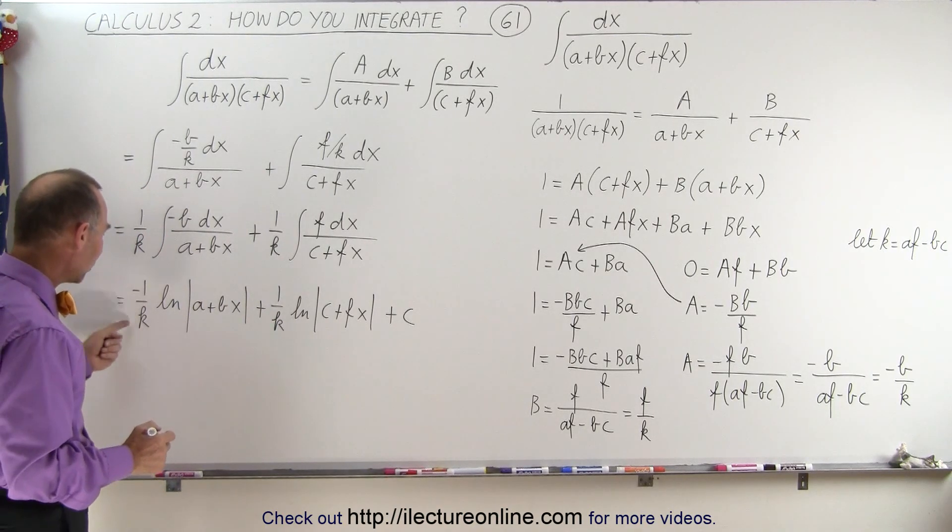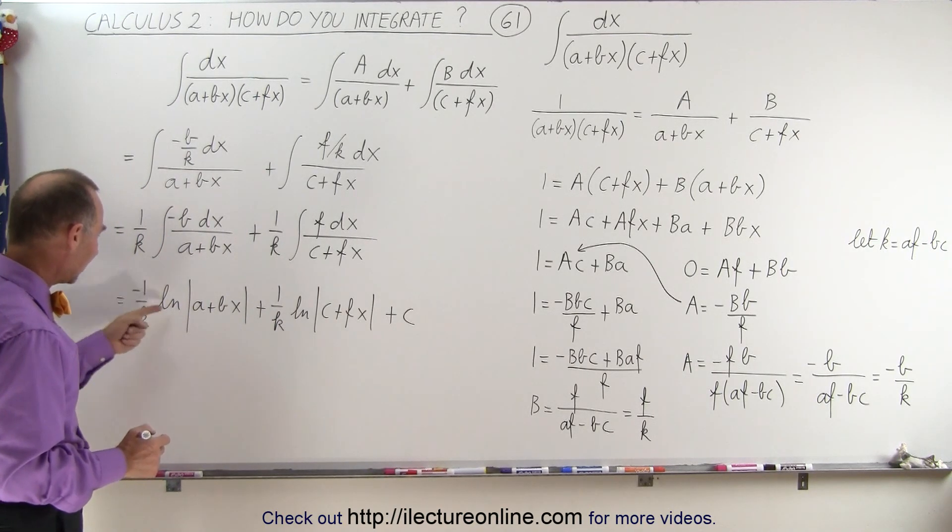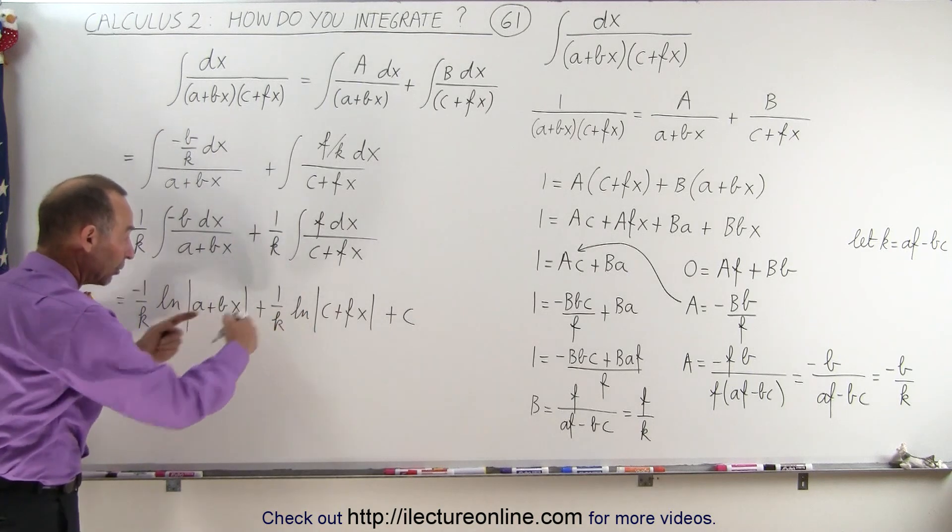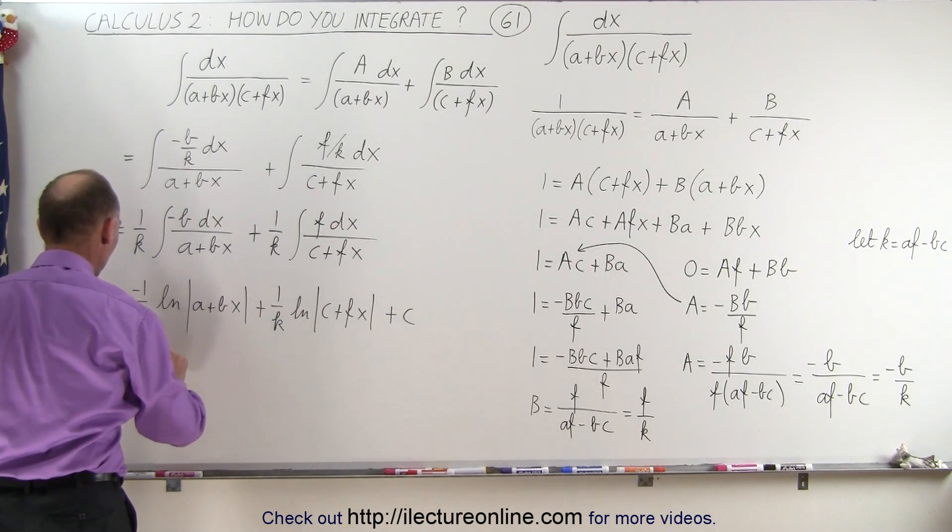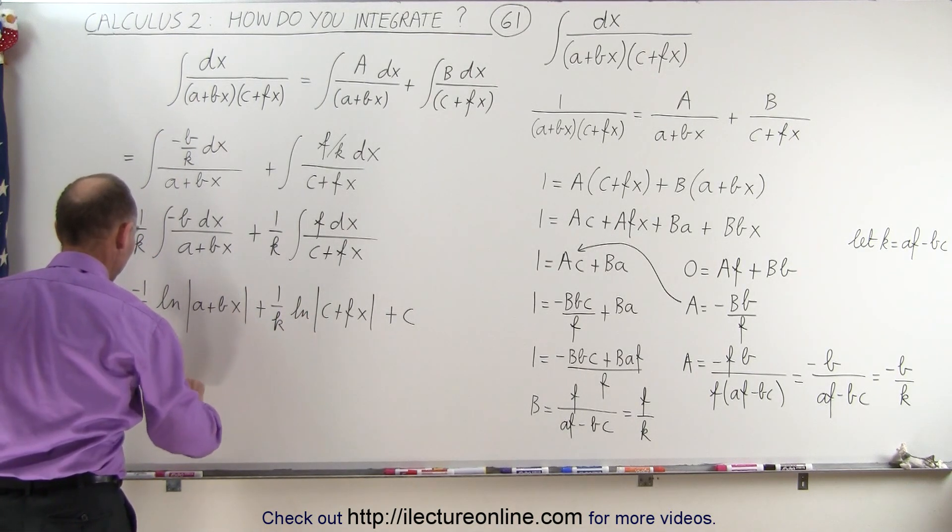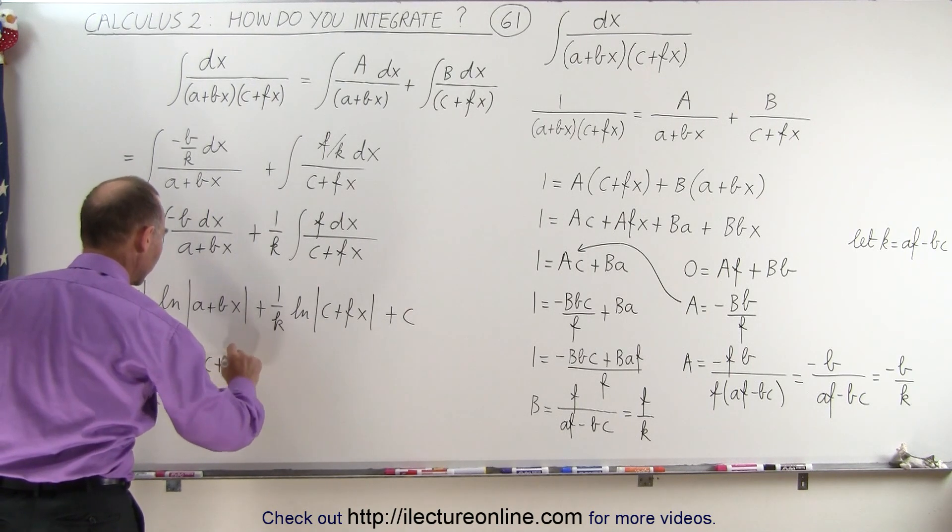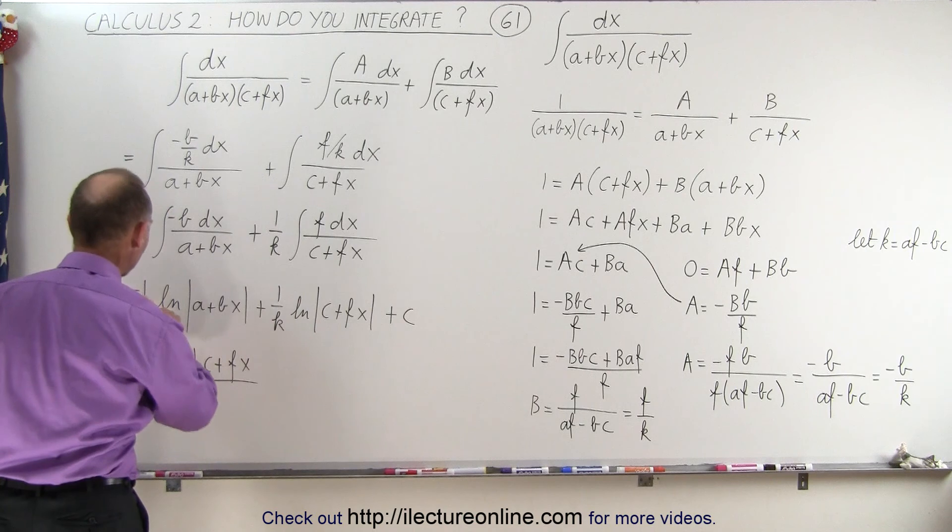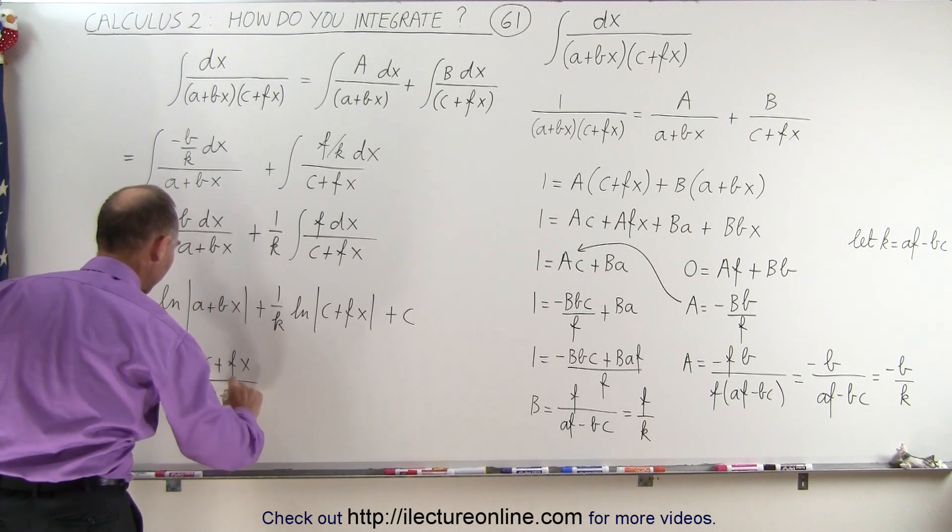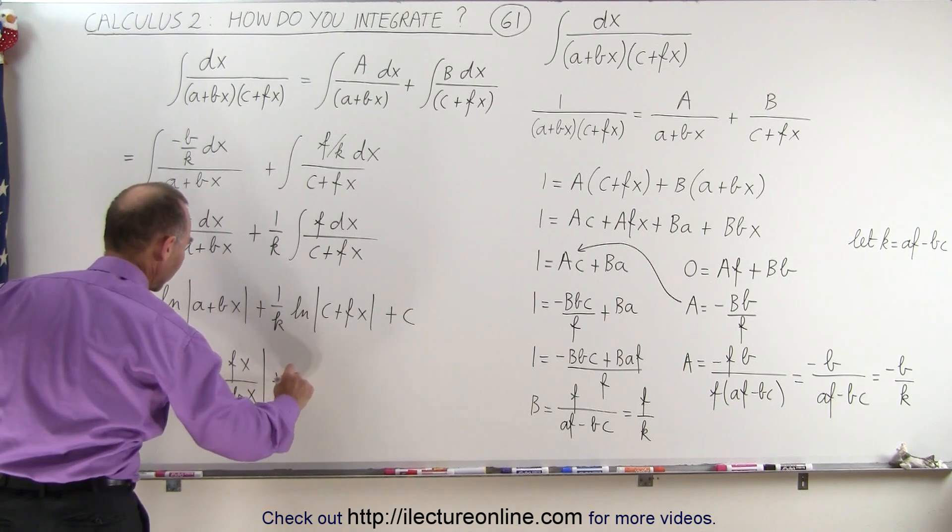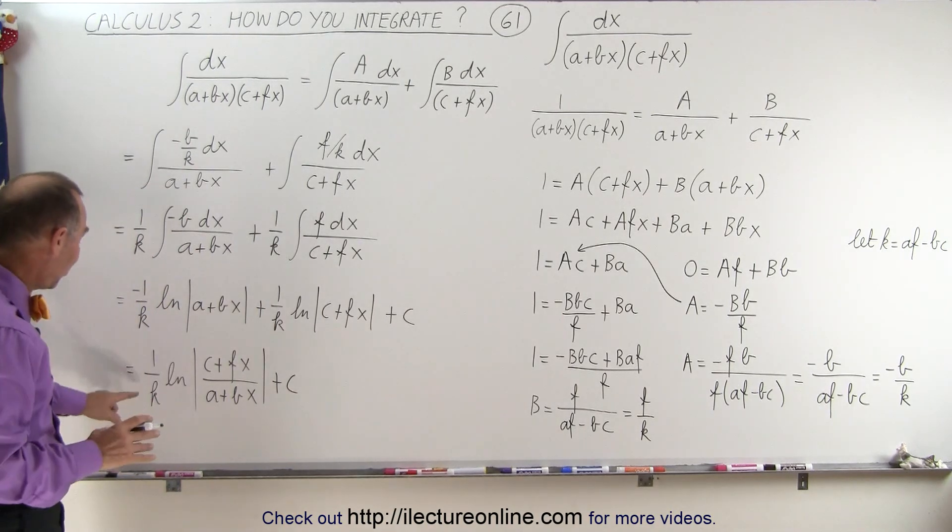And then if we factor 1 over k, notice we have a negative natural log there, we can combine those two and write this as 1 over k times the natural log of, we take the positive one and write in the numerator, c + fx, divided by the denominator a + bx plus a constant of integration.